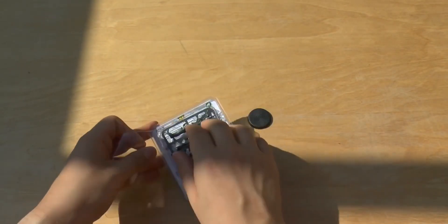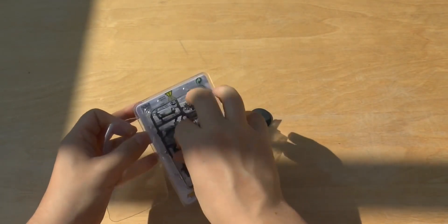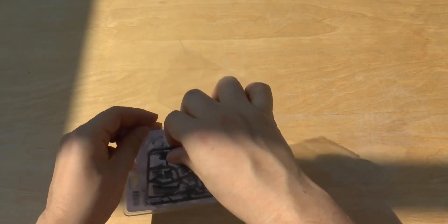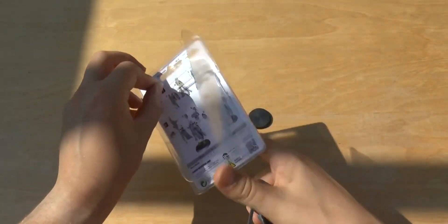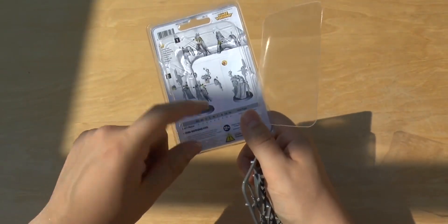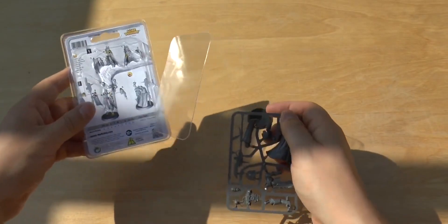So you get your 32mm base. It doesn't want to come out, does it? You get your instructions and you get a little bit of rules as well, but if you've got the codex, you'll have them already.